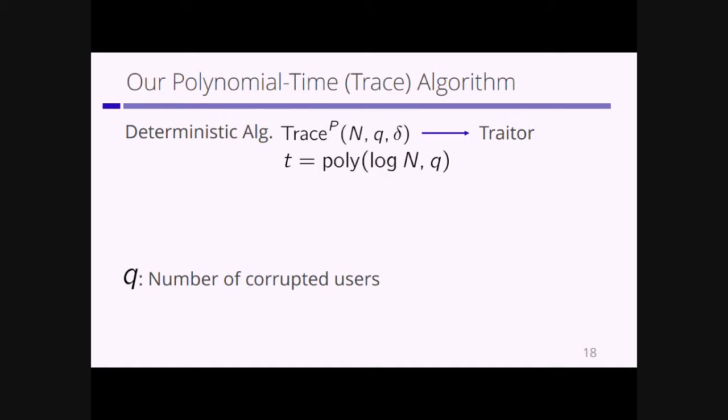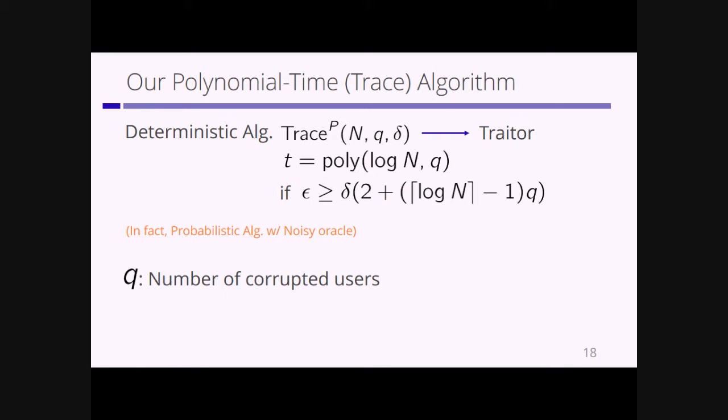We propose a polynomial-time algorithm for this problem. The deterministic trace algorithm has oracle access to P and outputs one of the traitors. This algorithm runs in time polynomial in log N and q, where q is the number of corrupted users, provided epsilon satisfies a certain condition. In the real setting, the pirate decoder is a probabilistic algorithm, so our trace algorithm is also a probabilistic algorithm with oracle access to a noisy oracle. For simplicity, I explain the simplified deterministic setting.